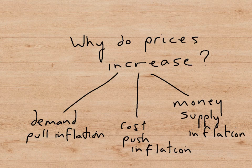Firstly, there is demand pull inflation. Then there is cost push inflation. And finally, perhaps the most complicated and hardest to understand, is money supply inflation. Thankfully, it also happens to be the rarest type of inflation and therefore the least important.